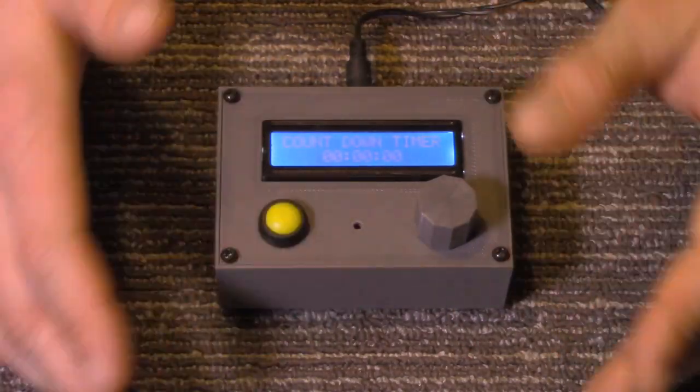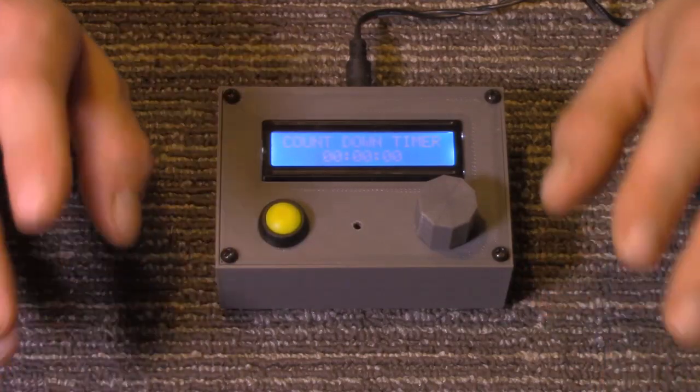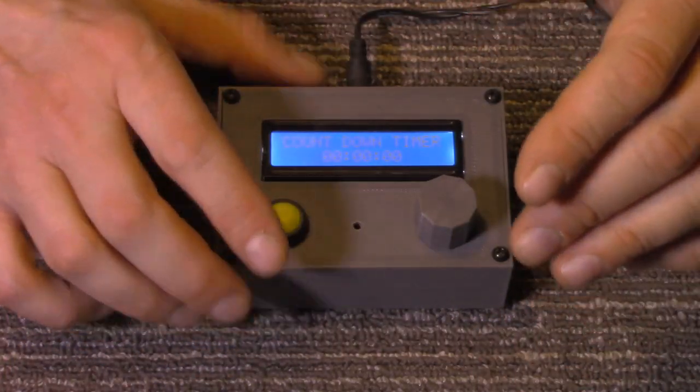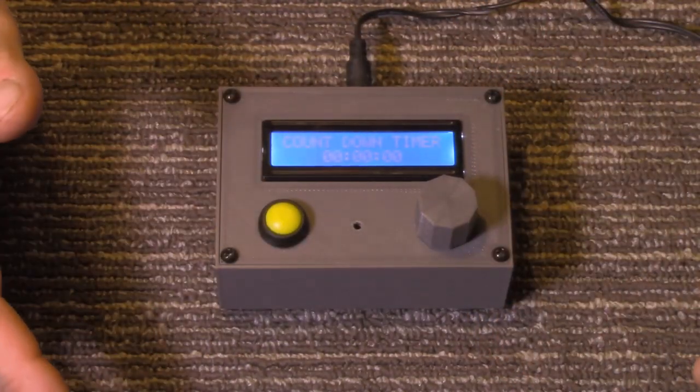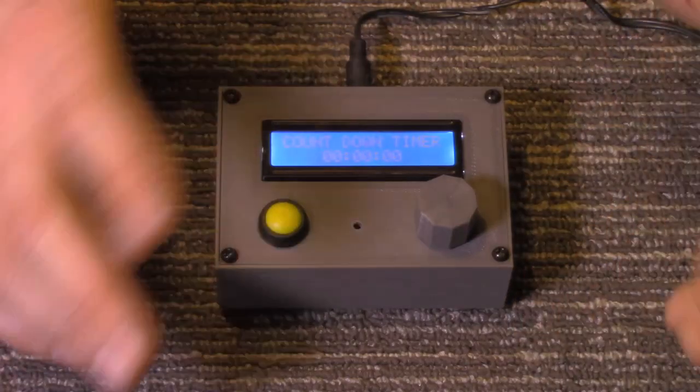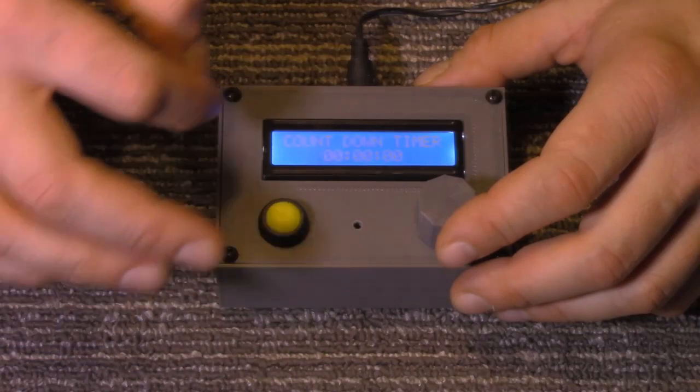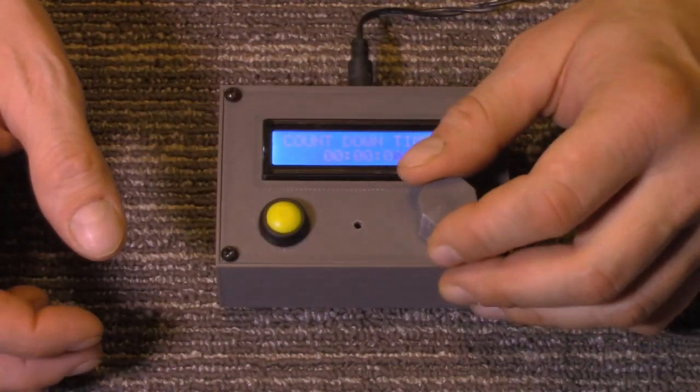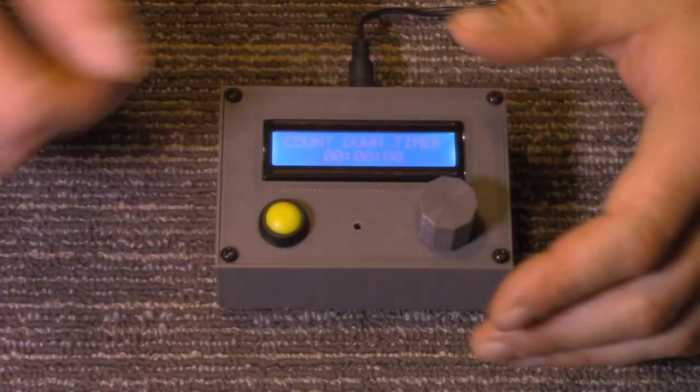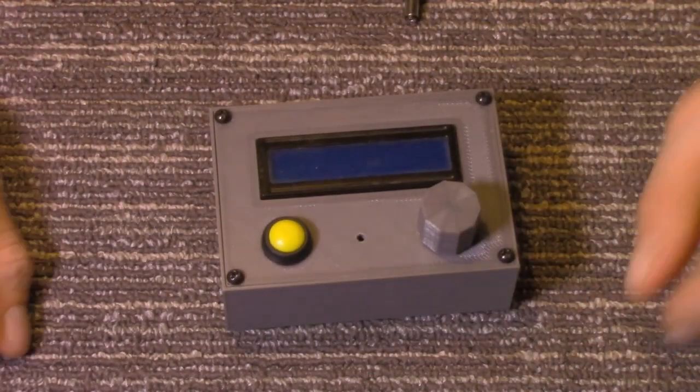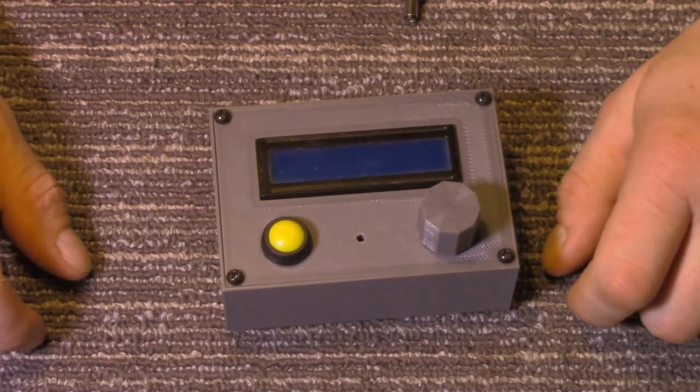All right. Well, the code and the schematic for this, everything, just look in the description below. There's a link to the webpage. I'll have a parts list on there as well. But why don't we open this up? And I'll show you the insides here because I think we've went over everything and how it works. And I will be making another code that will allow you when the screen first starts, you'll be able to select count up or count down and then go through. I didn't bother putting a reset button. If for some reason you want to reset it, it's just simple as unplugging it and then plug it back in.